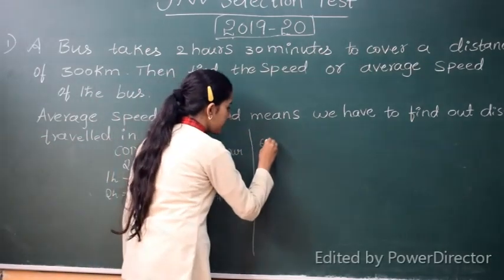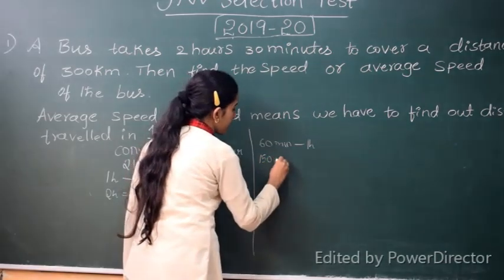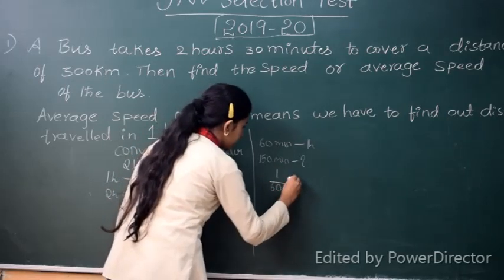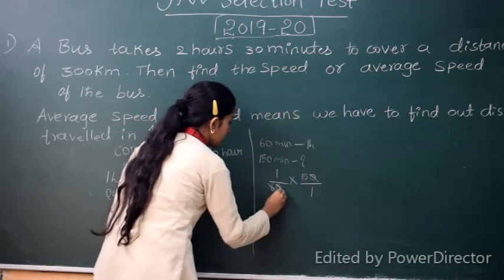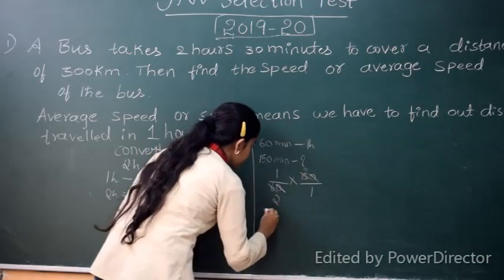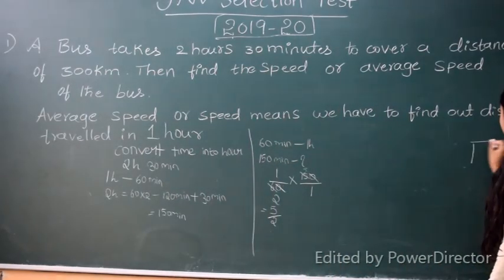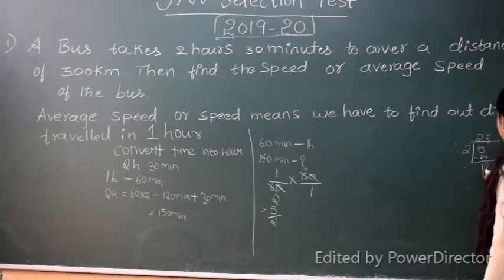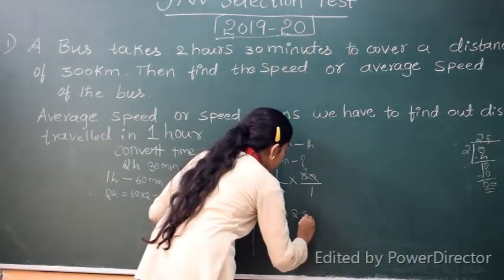So for 60 minutes, if it is 1 hour, then for 150 minutes we have to find hours. To find that, we will divide 1 by 60 and multiply it by 150 by 1. So 3 times 2, 3 times 5. So that will be 5 by 2. So 5 by 2 is equal to 2.5 hours.